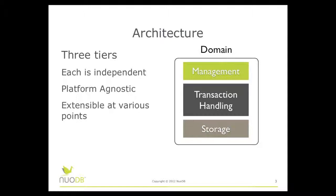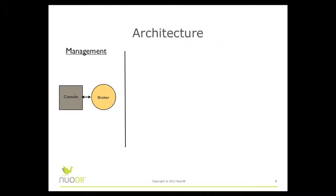Now let's take a closer look at the components for each tier. The management tier consists of the management console and the broker process. The management console is the GUI used to configure the NuoDB system. The broker process is running on at least one node and is responsible for coordinating all communication between the application and the database. When the application queries the database for the first time, it will ask the broker process which transaction engine it should use. Once the broker has made that initial introduction, it fades into the background and is not needed again unless the application needs to connect to a new transaction engine. There must always be at least one broker process running at all times.